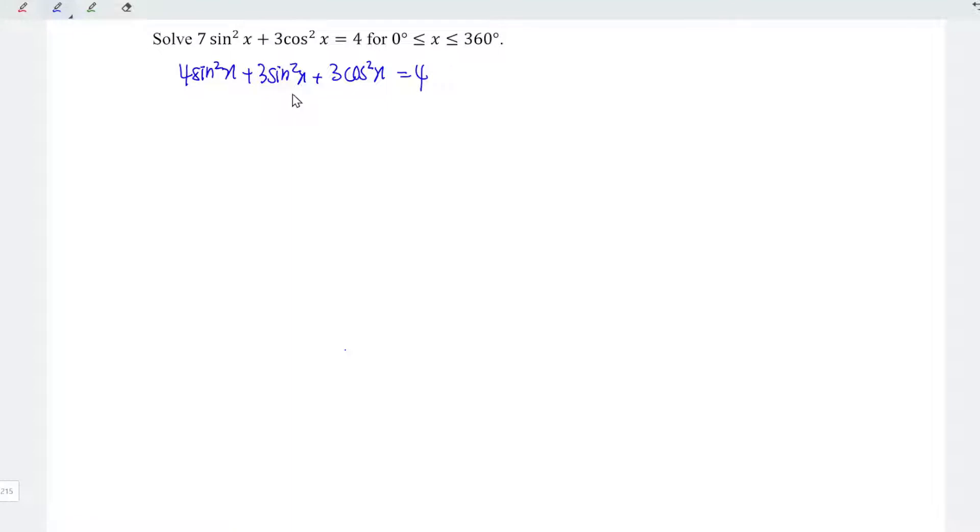We know that by using the particular identity, sin squared x plus cos squared x is equal to 1. 1 times 3, we get back 3. So we have 3 plus 4 sin squared x on the left, and this is equal to 4 on the right.